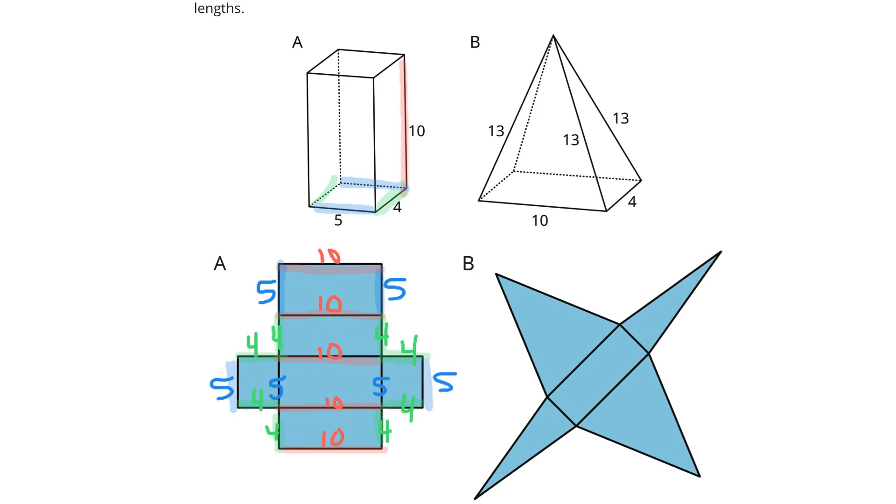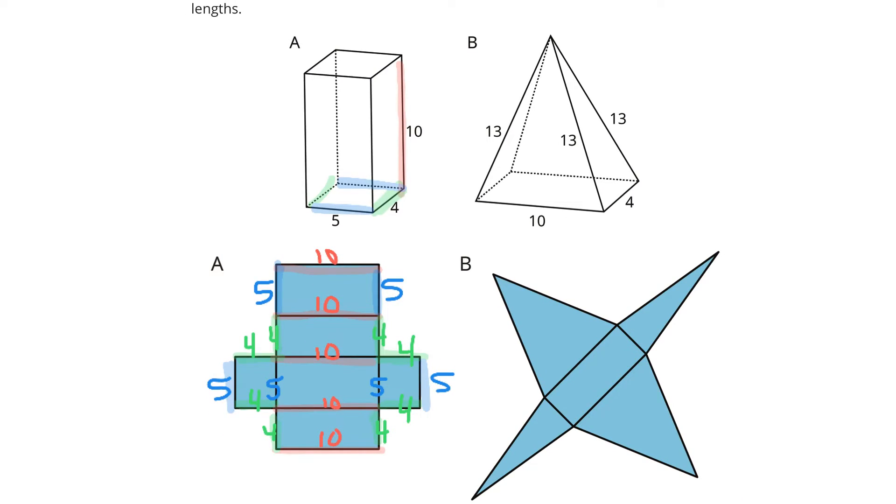What about our rectangular pyramid? Well, if I just look at the rectangle first, the long part of the rectangle is certainly 10. So, a 10 here and a 10 there, whereas the short part of the rectangle certainly looks like 4. So, a 4 there and a 4 here. All of those slants for the triangle look like they're 13. And so, these are all going to be 13.